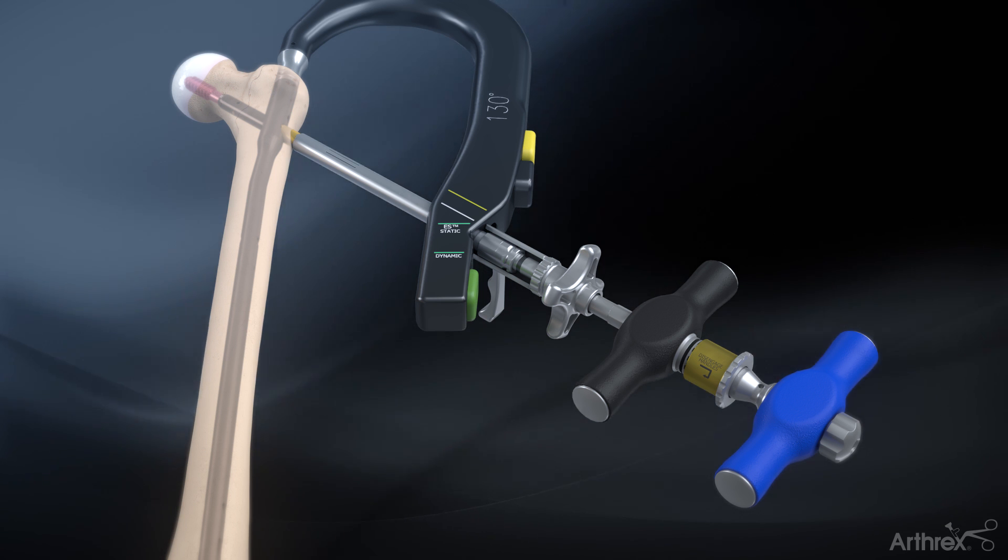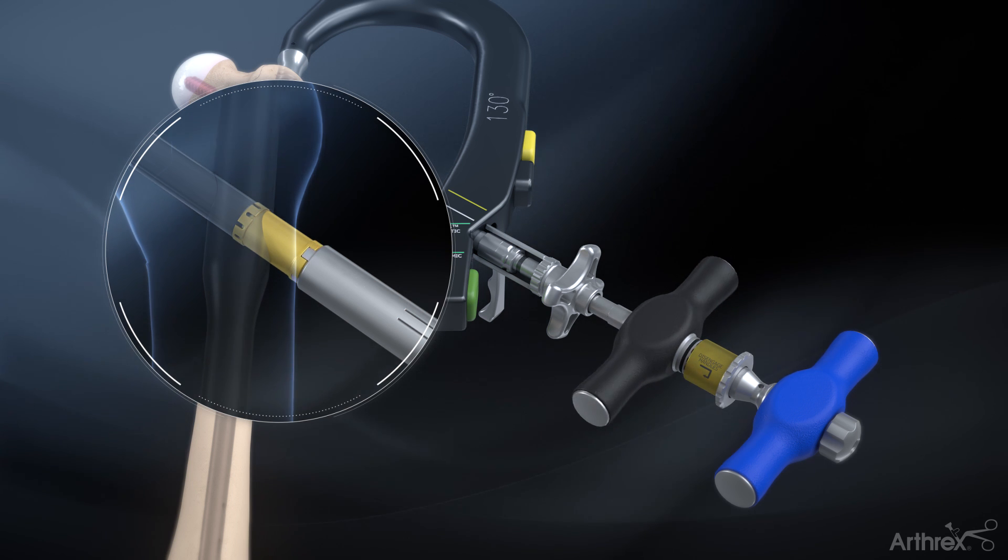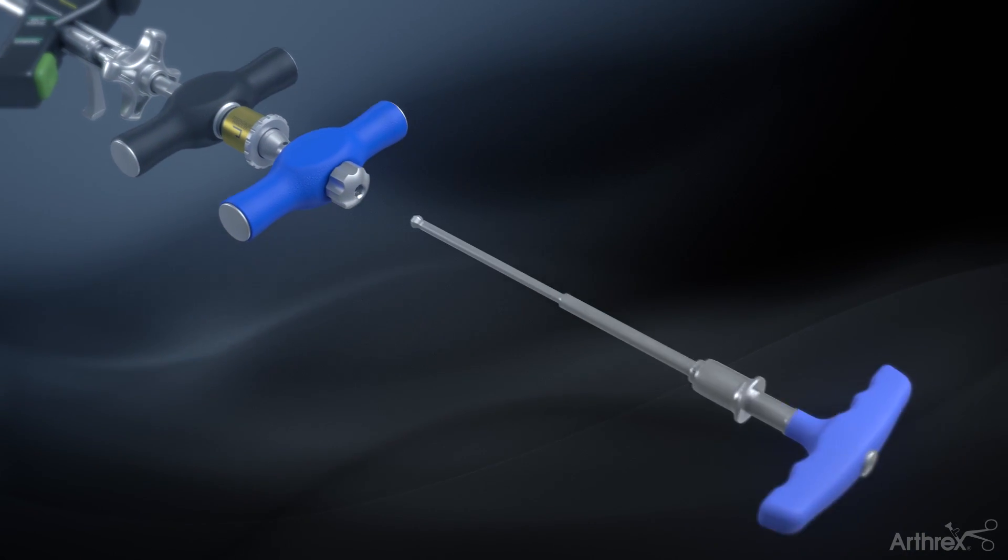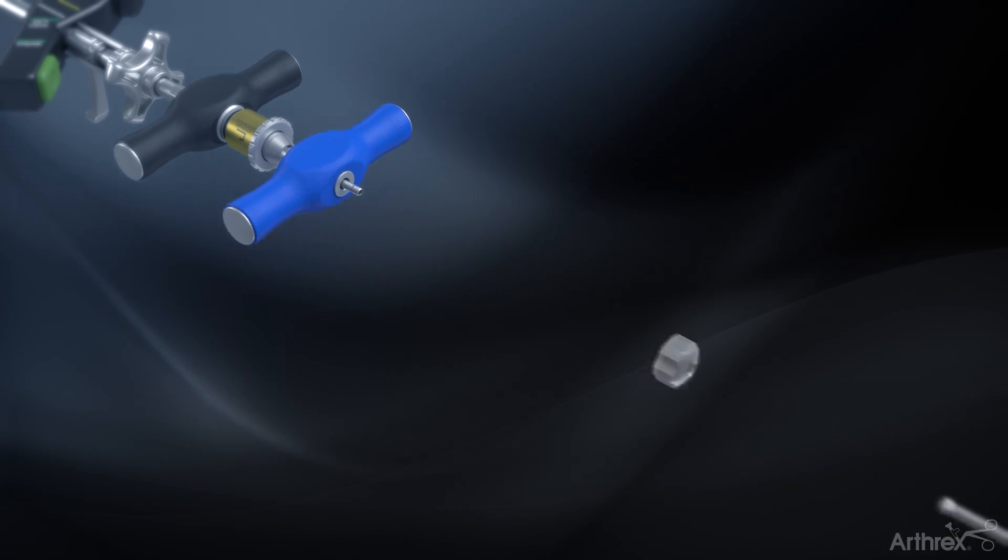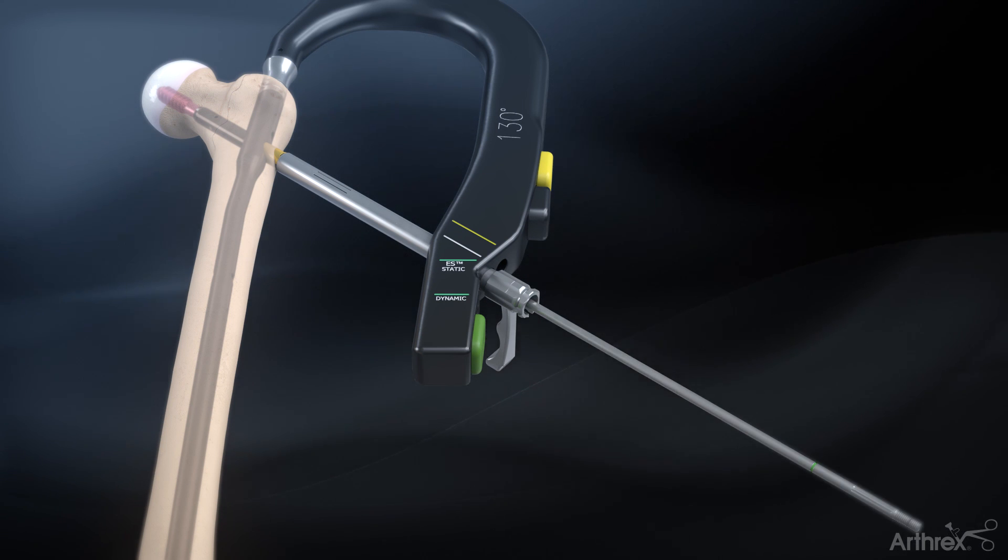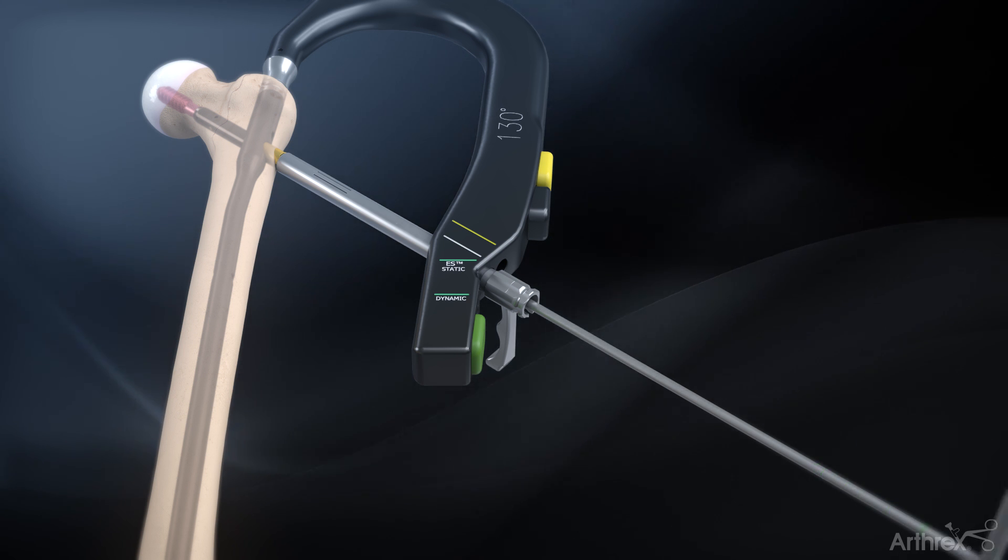To lock the telescoping lag screw, hold the blue handle stationary and turn the black handle clockwise until the torque limiter clicks. Remove the lag screw capturing rod nut by hand or with the ball hex driver. Pull out the lag screw inserter assembly and unscrew the lag screw capturing rod by hand or with the removal tool.